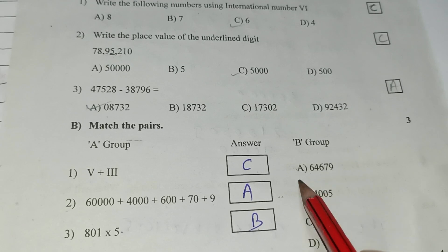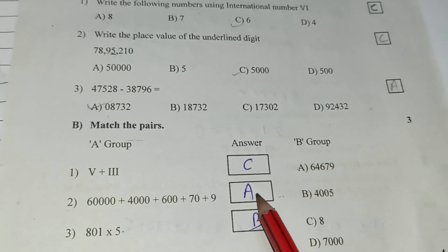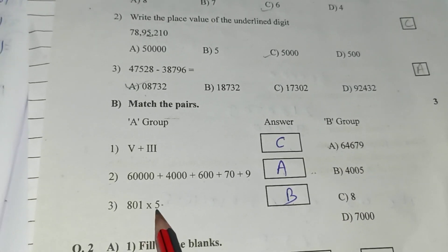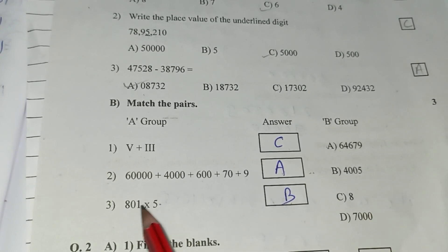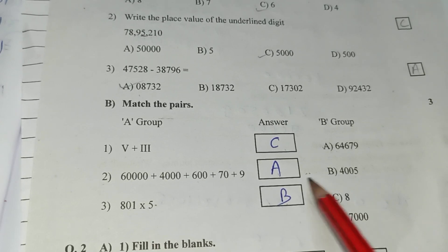4, 6. Here A. 5 into 1 is 5. 5 into 0 is 0. 5 into 8, 40. B.